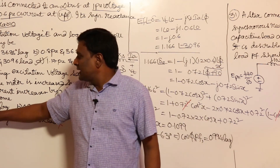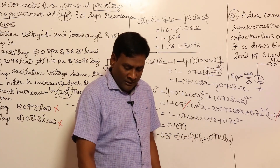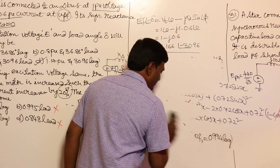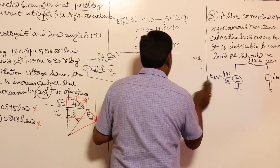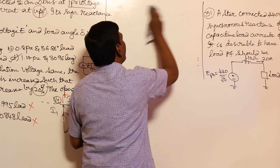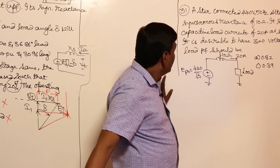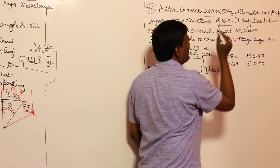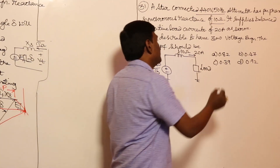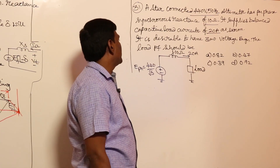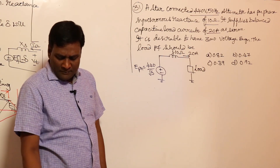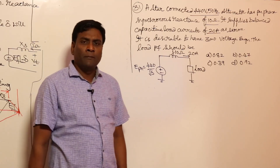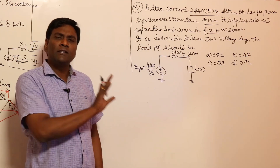So 0.994 or 0.995 lag is the right answer. Now one more problem — it is also a voltage problem. See: a star-connected 440V, 50Hz alternator has synchronous reactance of 10 ohms. It supplies balanced capacitive load currents of 20 amperes as shown. It is desirable to have zero voltage regulation. Many times they may not ask you to solve the problem.